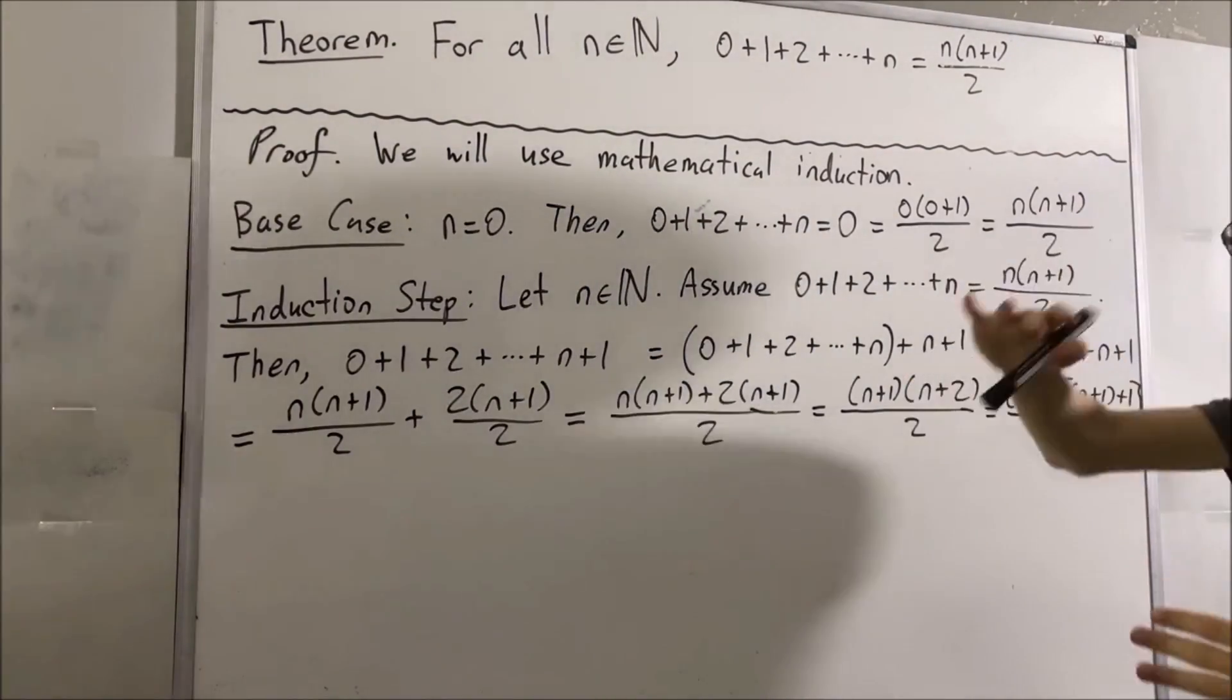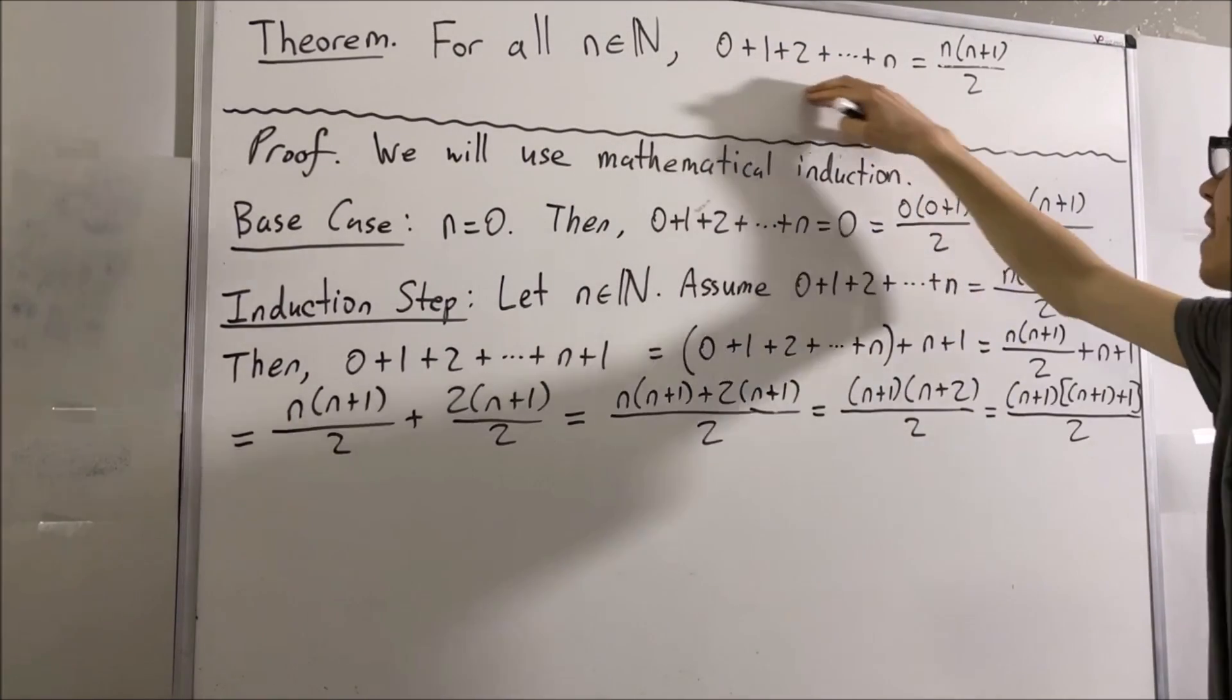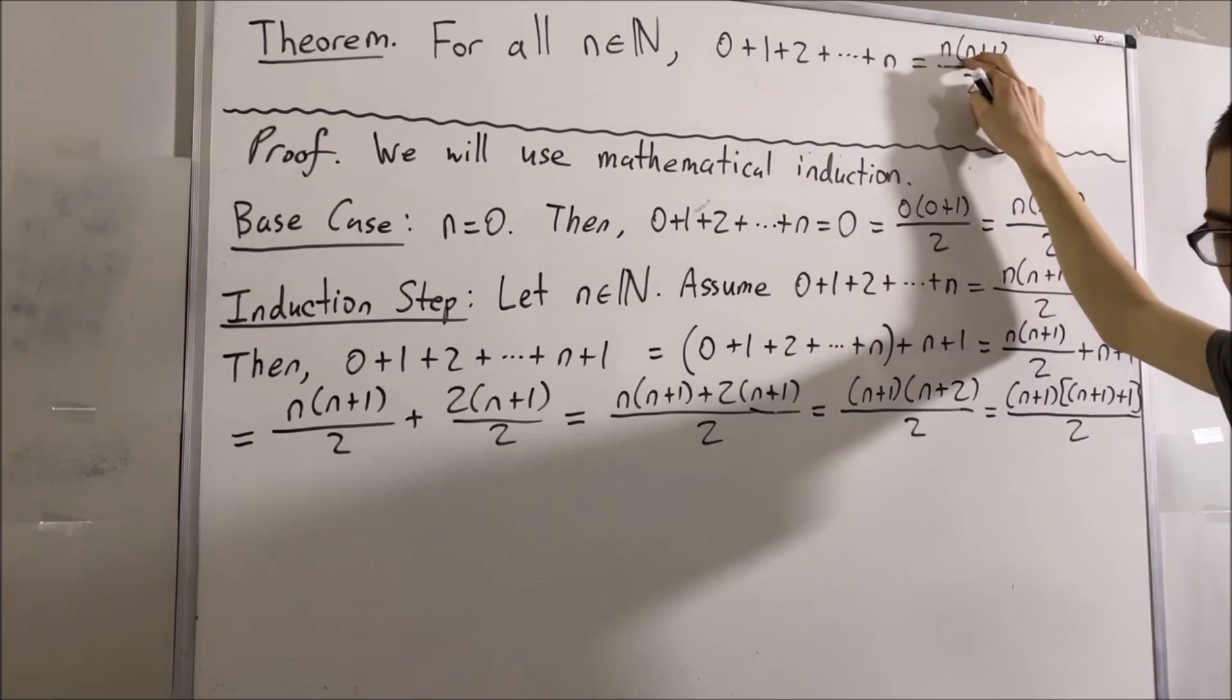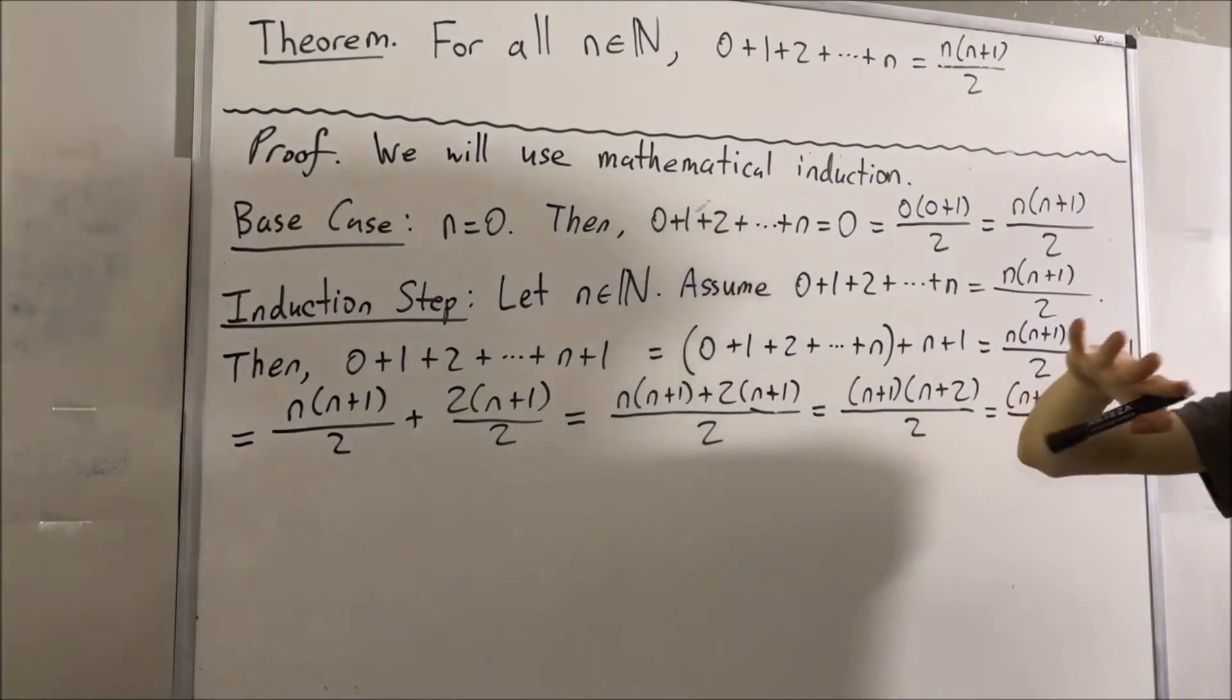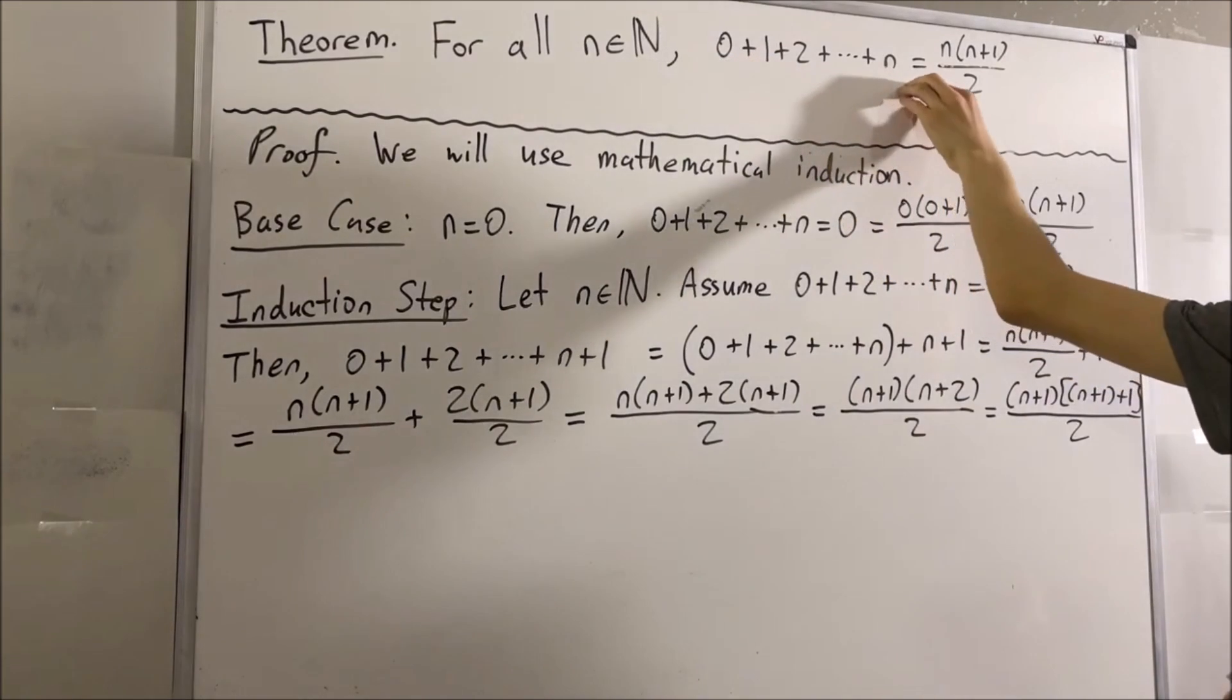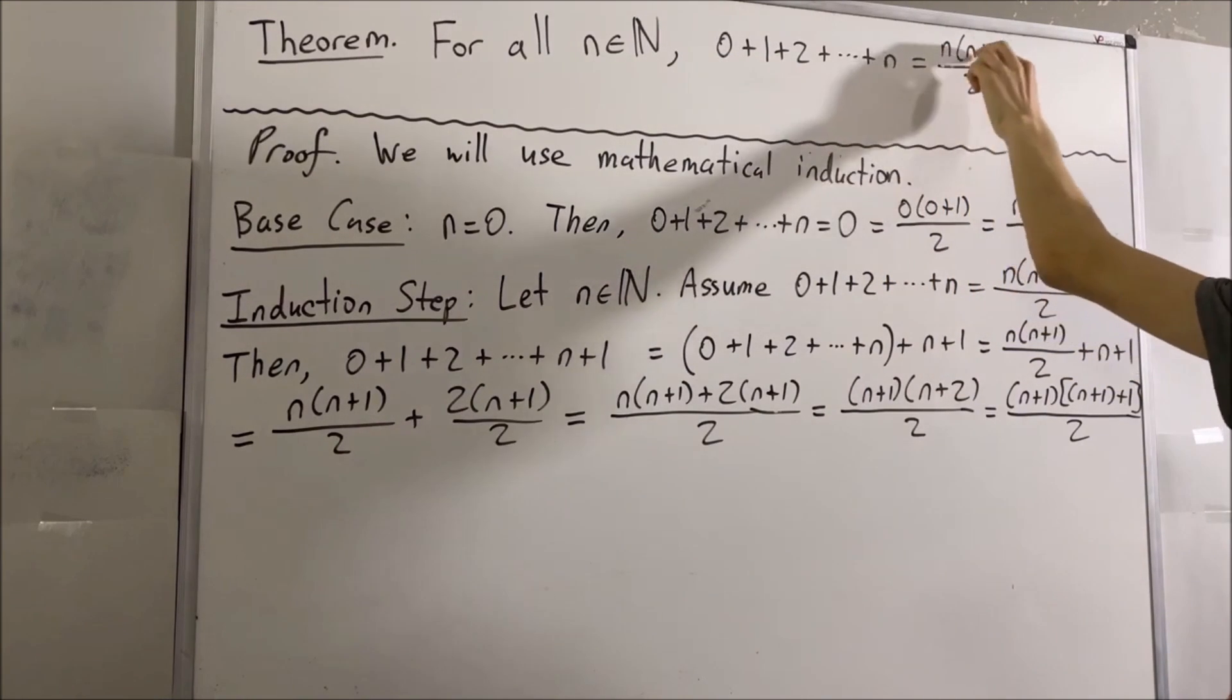Because now, we have proven that this statement is true if instead of n, we replace it with n plus 1. The reason why is, notice this is a sum from 0 to n. And over here, we have n, n, 1, n, 2.